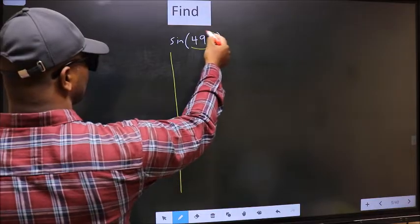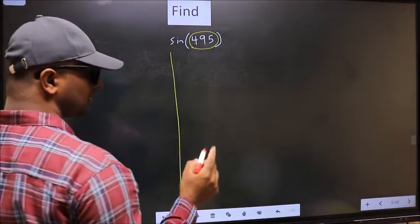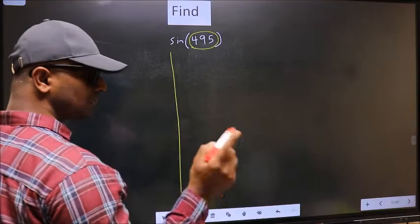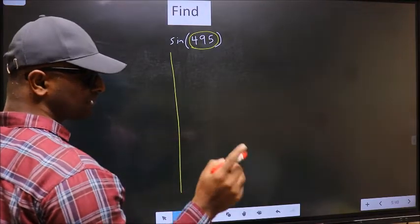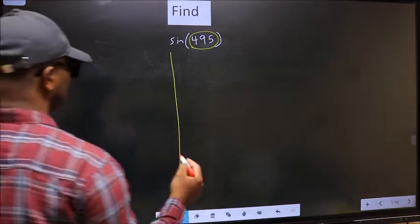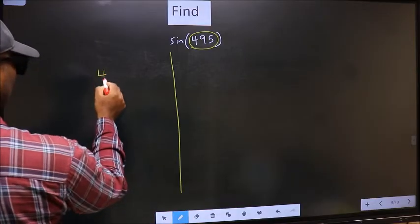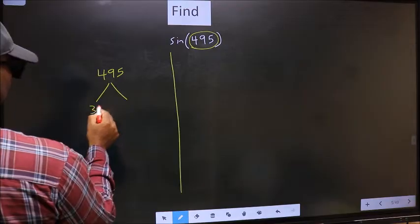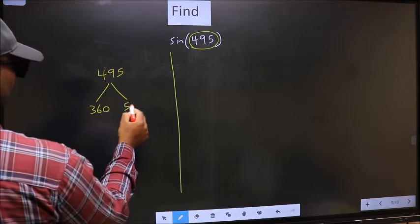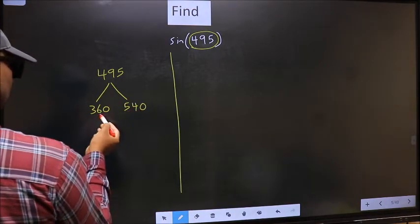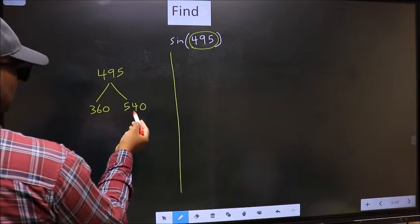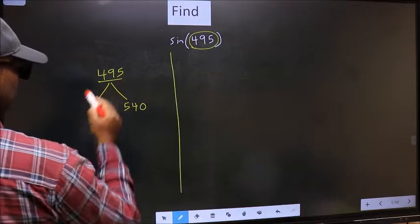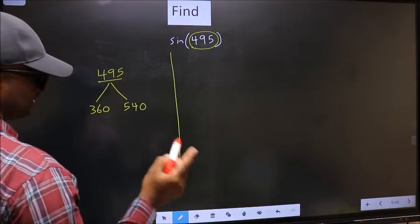Here we have 495. Now you should check: 495 lies between which two multiples of 180? What I mean is, 495 lies between 360 and 540. This is 180 into 2, and this is 180 into 3. Between these two numbers, 495 lies.